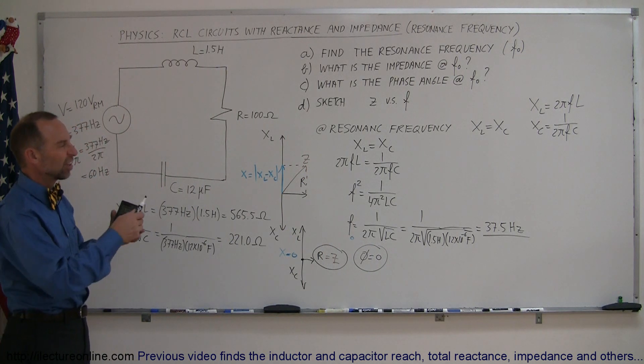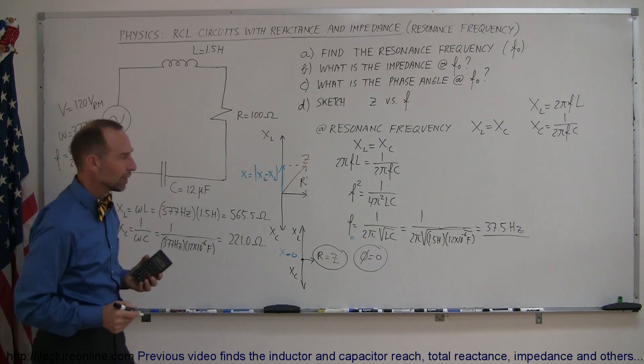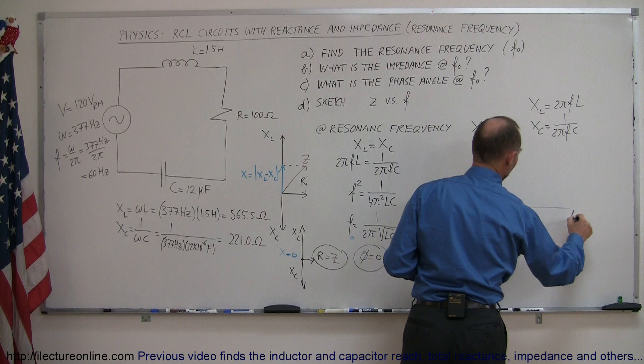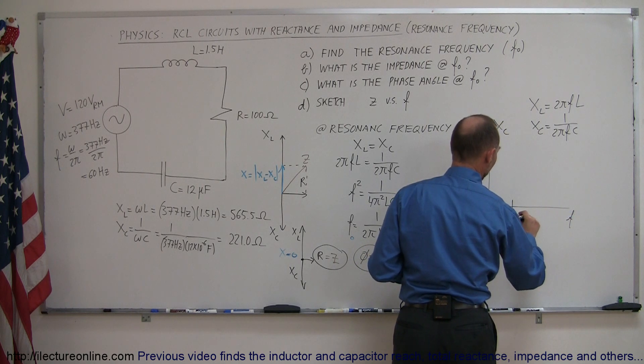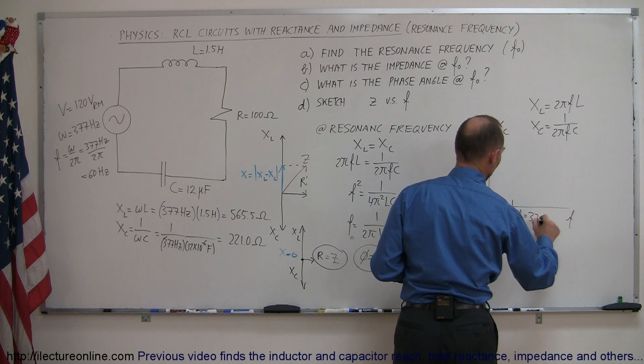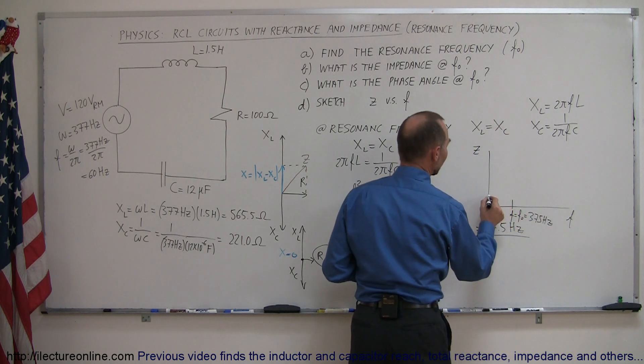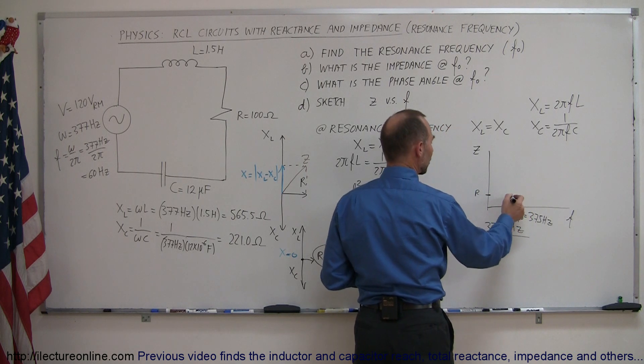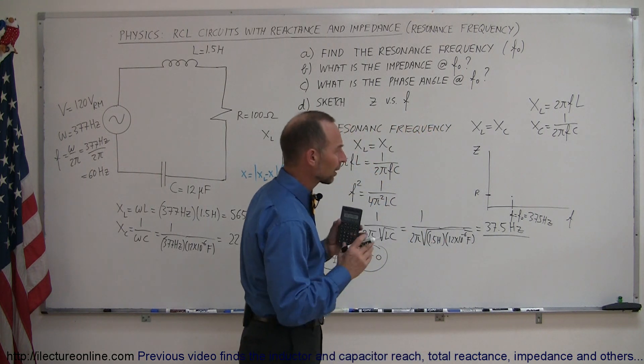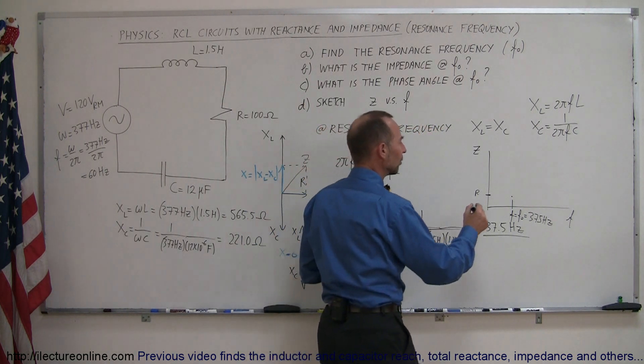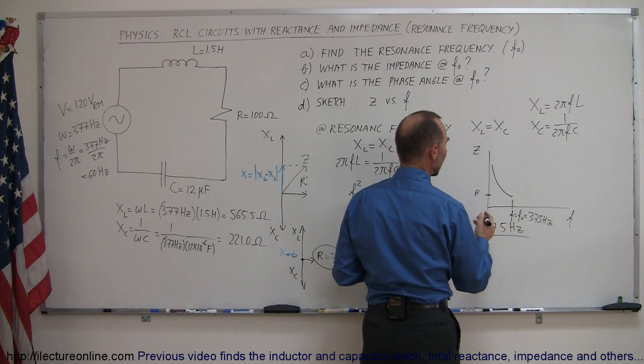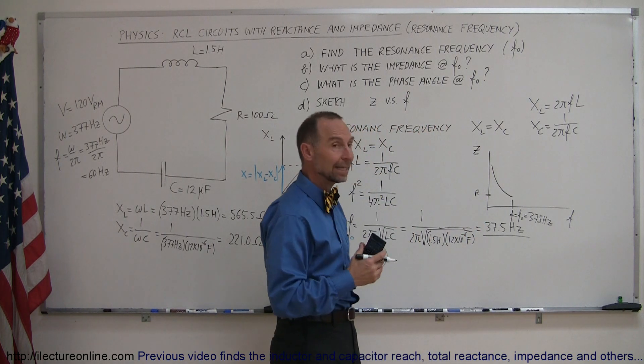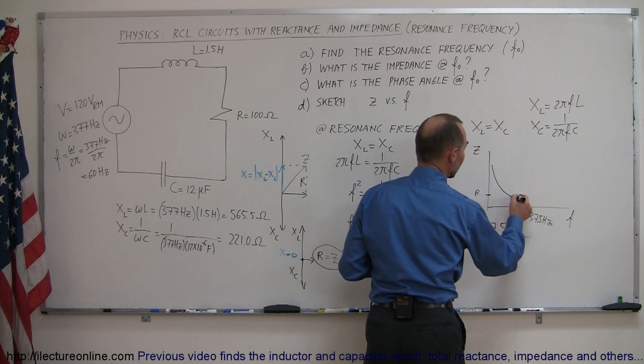And finally, if we're going to sketch a graph that shows the impedance versus the frequency, here we have the impedance and here we have the frequency. If we have that resonance frequency, if F equals F sub naught, which in this case is 37.5 Hz, that means that the impedance is as low as it can get, then that will be equal to the resistance right there. If the frequency gets smaller, that means that the capacitor will become a much bigger player in the circuit, and the capacitor reactance goes up, so the total impedance goes up. And if the frequency gets larger, then the inductor becomes much more of a part in the circuit, and the inductive reactance goes up, and so the impedance goes up as well.